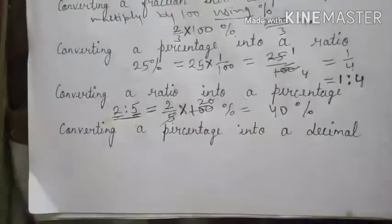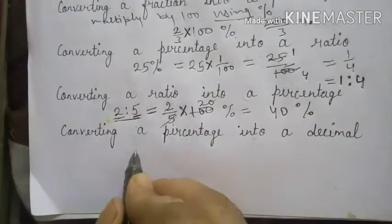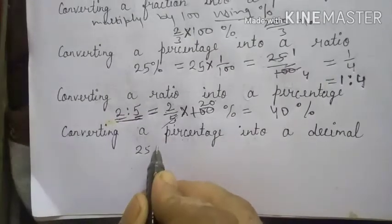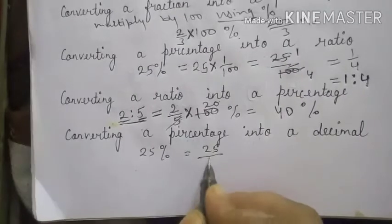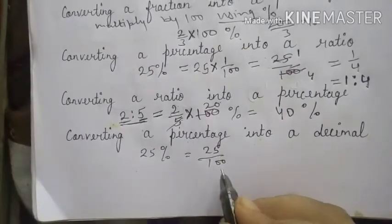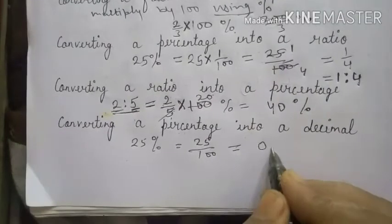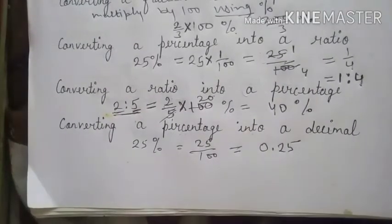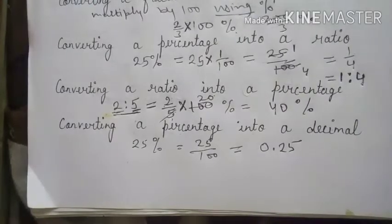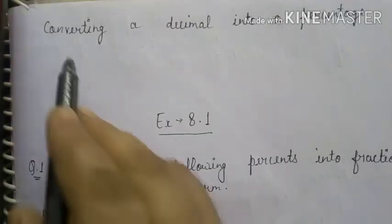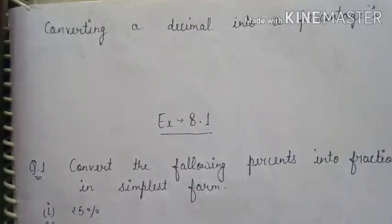Converting a percentage into a decimal: if 25% is given, it can be written as 25 upon 100. Now we divide 25 by 100, which gives 0.25.